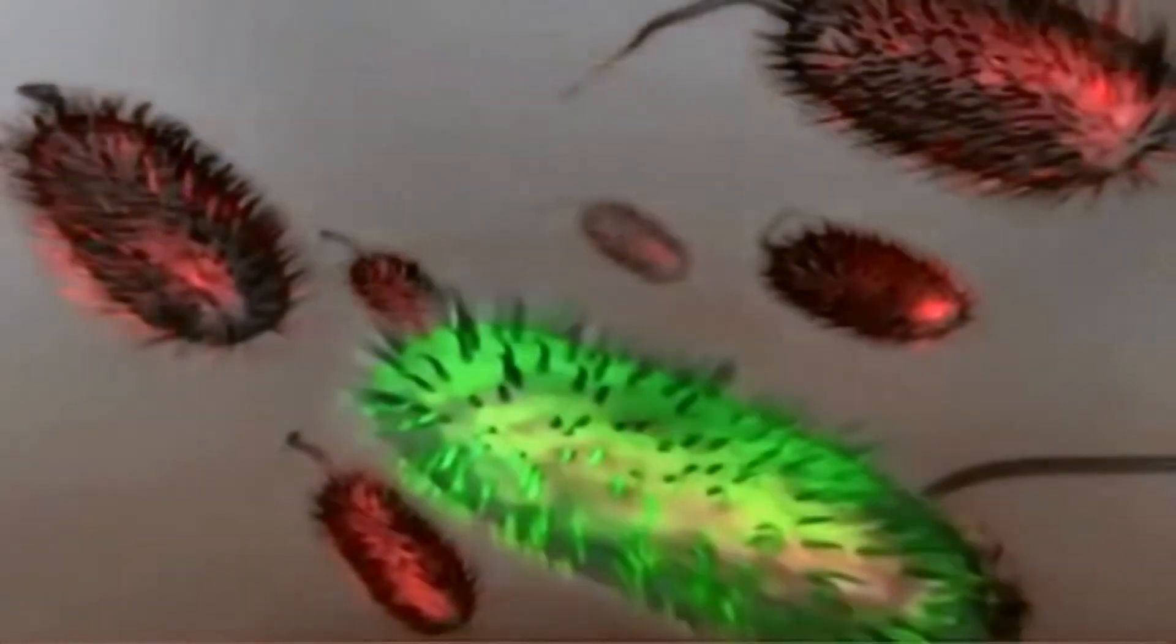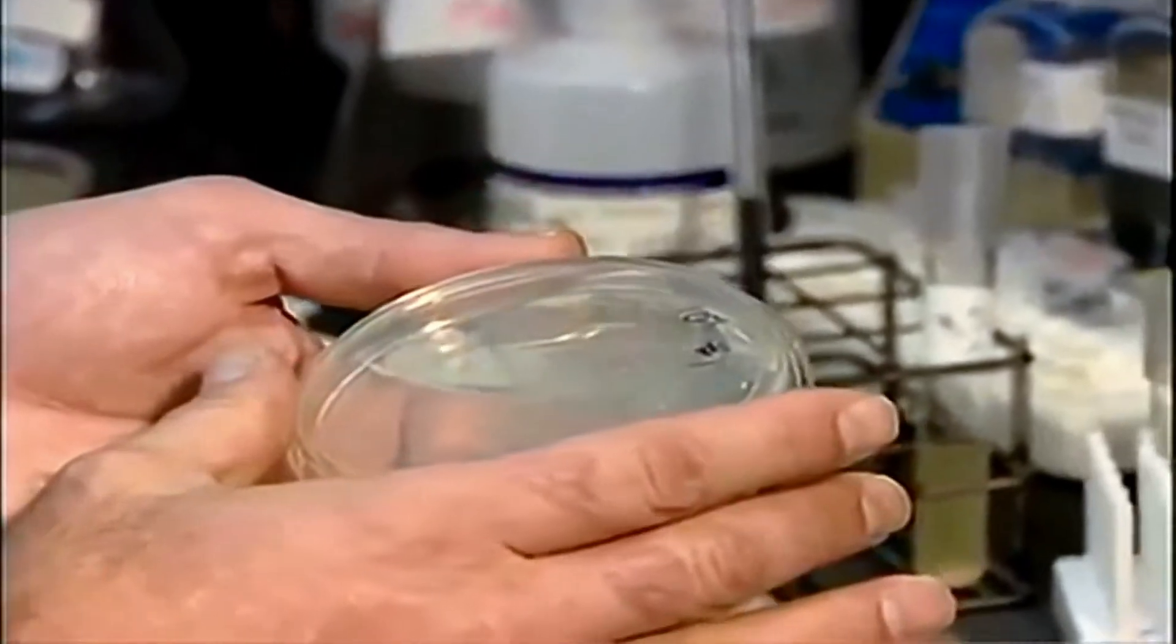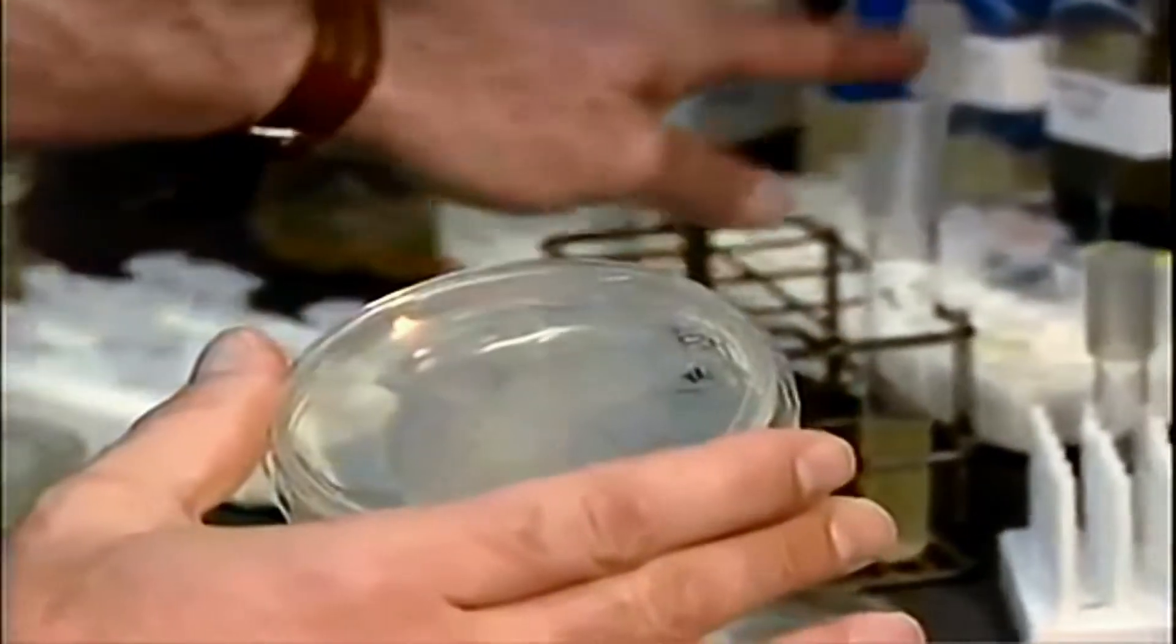Within one or two transfers of overnights, you can lose that population of resistant cells. And then after the third transfer, the resistant isolate has been completely outcompeted by the parent.